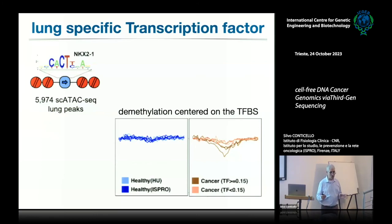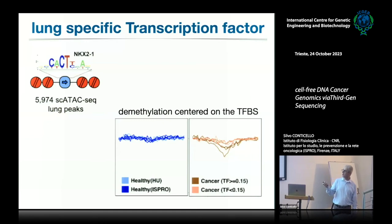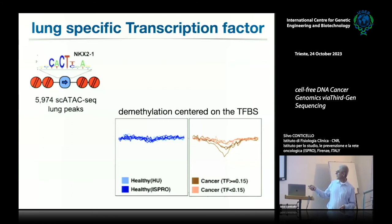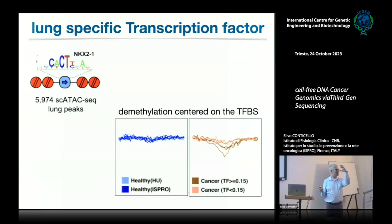Another thing we can do is look at transcription factor binding sites. NKX2 is a transcription factor specific only to lung cells. If we take all NKX2 transcription factor binding sites and look at them together with healthy donors, we don't see much, but in tumor samples we start seeing a dip — because in this case the transcription factor is able to bind because the DNA is not methylated.